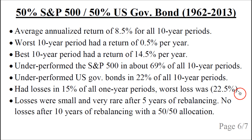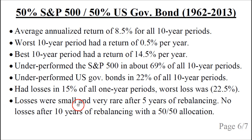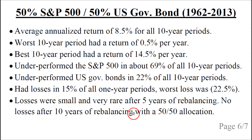Remember that the S&P 500 itself could lose almost 50% in a year. For the rebalancing, the losses were small and very rare after five years, and there were no losses after 10 years of rebalancing with a 50-50 allocation.